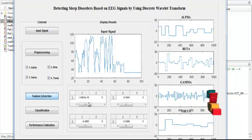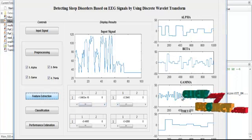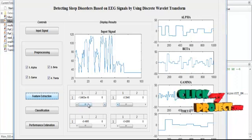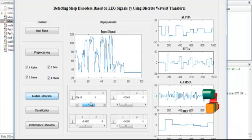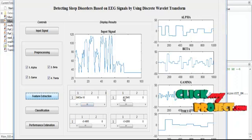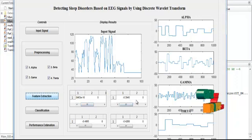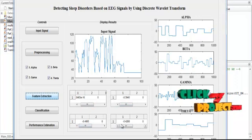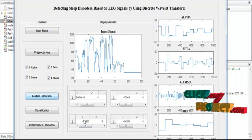After that, feature extraction will be carried out for alpha, beta, gamma, and theta separately. The features of the alpha signal are in table 1. In table 2, the beta signal features are shown. The gamma signal features are shown in table 3, and the theta signal features are shown in table 4.